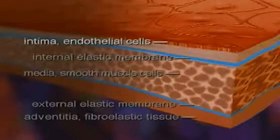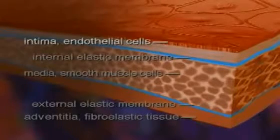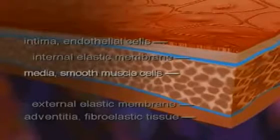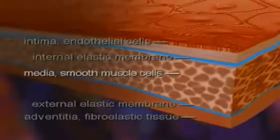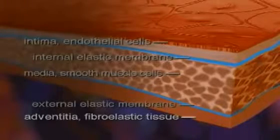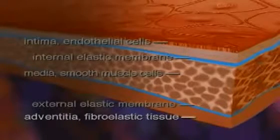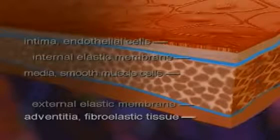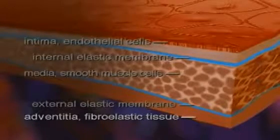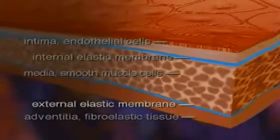The intima, or inner layer, is composed of a single layer of cells called the endothelium. The media contains mostly smooth muscle cells that enable the vessel to dilate or constrict. The adventitia, or outermost layer, is composed mostly of fibroelastic tissue. The adventitia is separated from the media by the external elastic membrane.